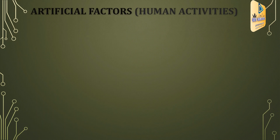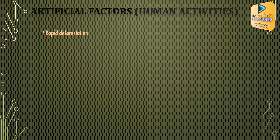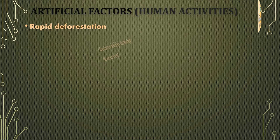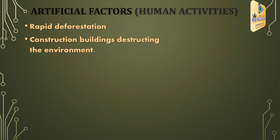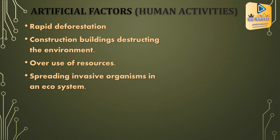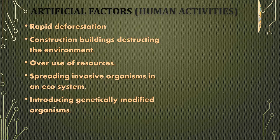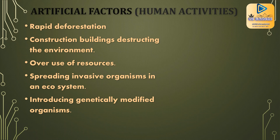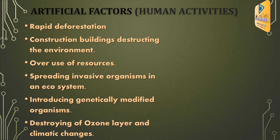Artificial factors from human activities are: rapid deforestation; construction of buildings destructing the environment; overuse of resources; spreading invasive organisms in an ecosystem; introducing genetically modified organisms; and destroying the ozone layer causing climatic change.